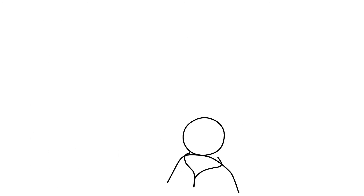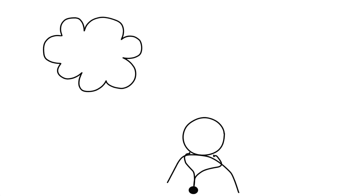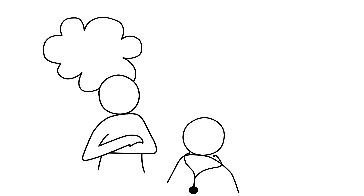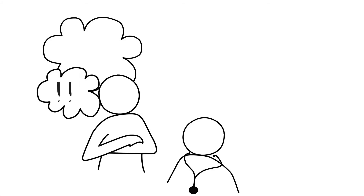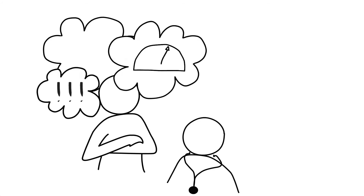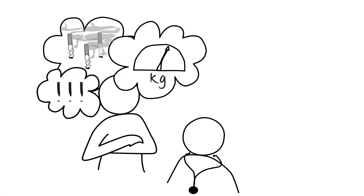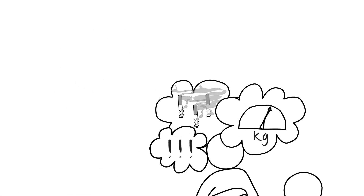When assessing tobacco users' readiness to quit, some may be unwilling to stop using tobacco for a variety of reasons, such as misinformation, concerns about the physical effects of quitting, and prior unsuccessful attempts. When a tobacco user appears unwilling to make a quit attempt, a brief motivational intervention can be used, called the five R's.